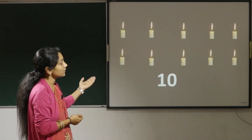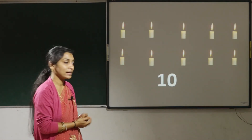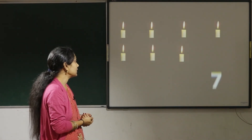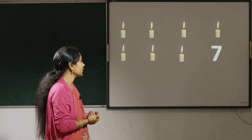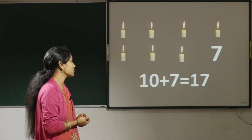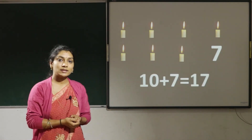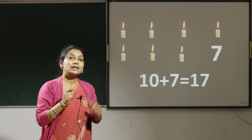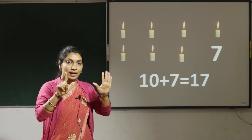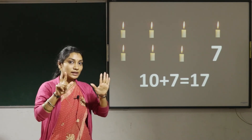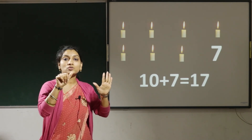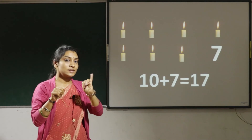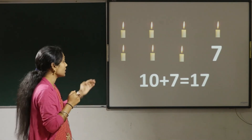Here there are 10 candles. Let us add 7 candles to that. So 10 plus 7 — 10 in the mind, 7 in the hand. After 10: 11, 12, 13, 14, 15, 16, 17.